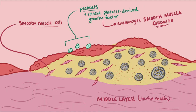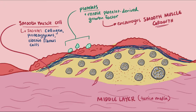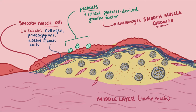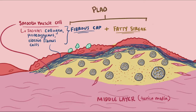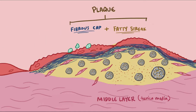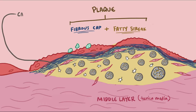The growing smooth muscle secretes collagen, proteoglycans, and elastin — fibrous cells that help form a wall around the fatty streak, preventing blood clotting. This extracellular matrix wall is called a fibrous cap, and together the fatty streak and the surrounding fibrous cap is called plaque. The presence of fatty streaks causes the underlying smooth muscle in the blood vessel wall to also start depositing calcium into the plaque, creating crystals.